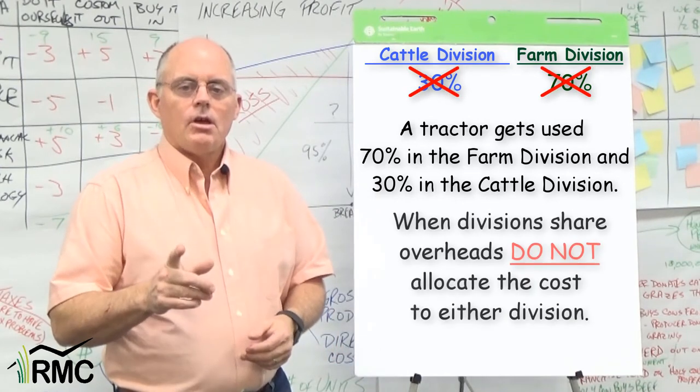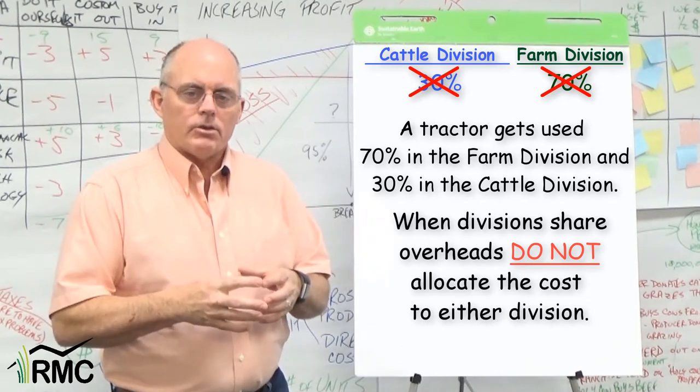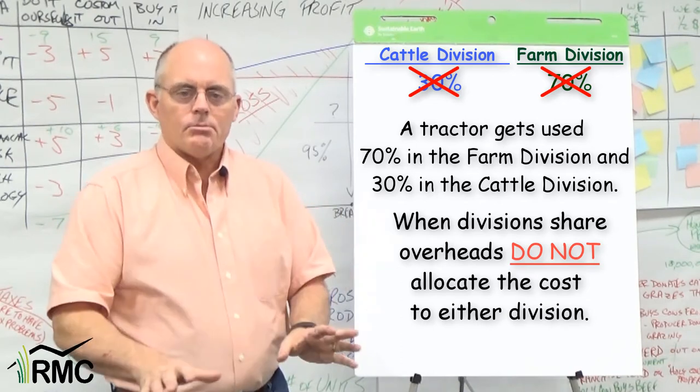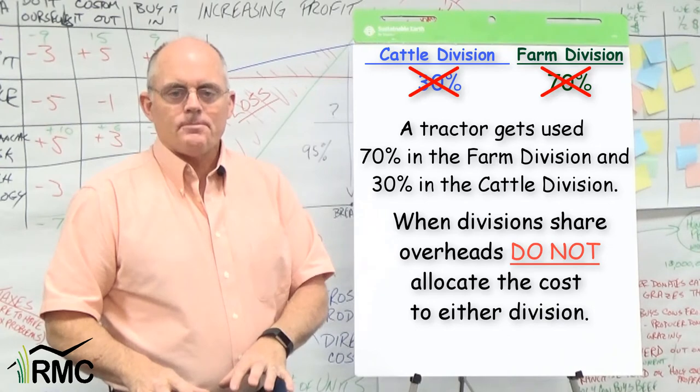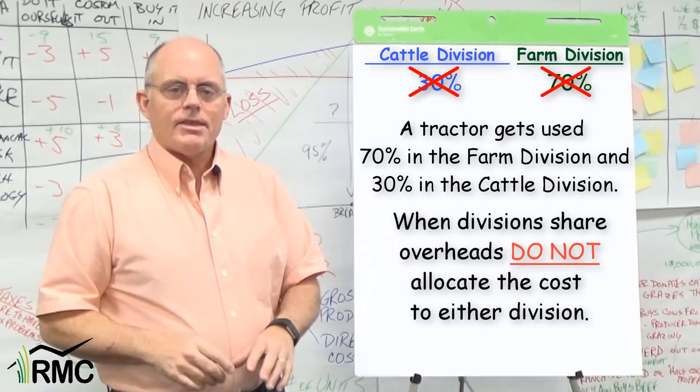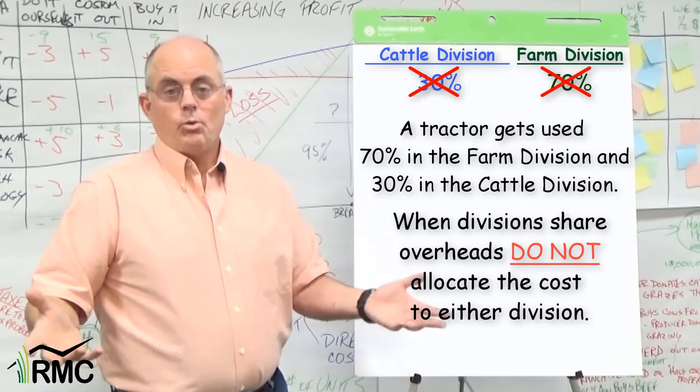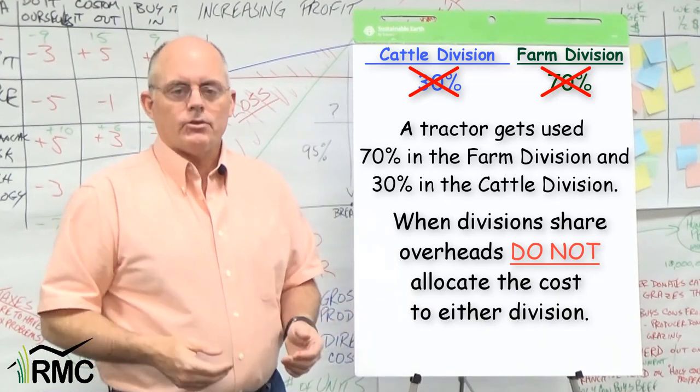The rule is, when divisions share overhead costs, those costs should not be allocated to either division. So if you don't allocate that cost to a division, where does it go? Good question. I'll show you.